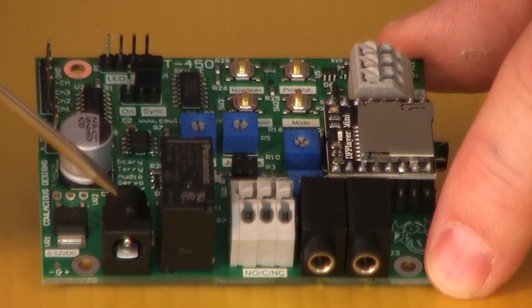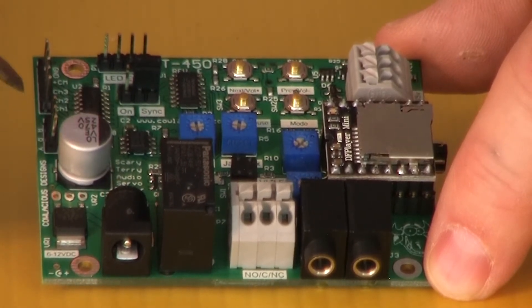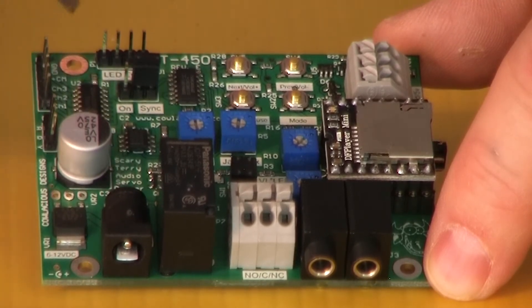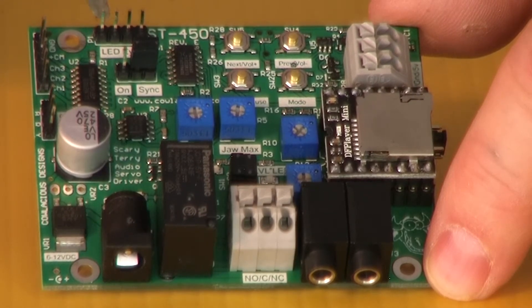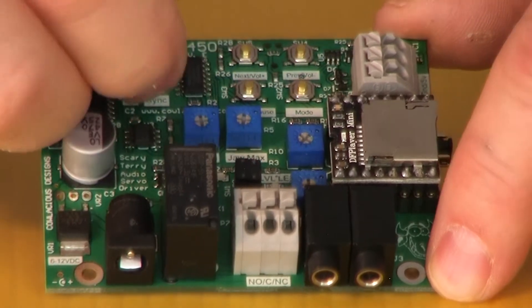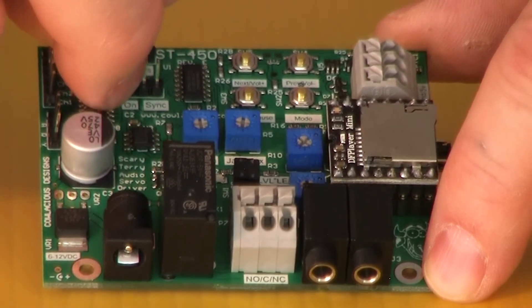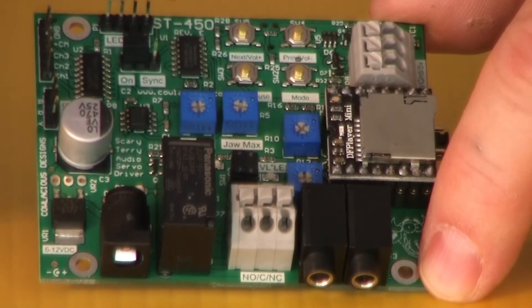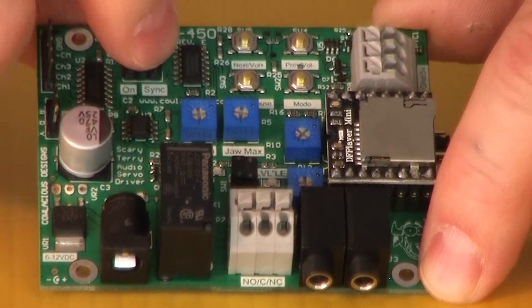We have the power jack, and over here we have the connections for the servo, connections for controlling high current devices. The standard connections on our Scary Terry board for the LED eyes which can be adjusted to either be on all the time by picking up this header and moving it over. The LEDs will be on all the time, and over here they'll be in sync with the sound, so they will flash with the sound.